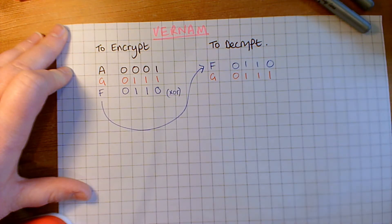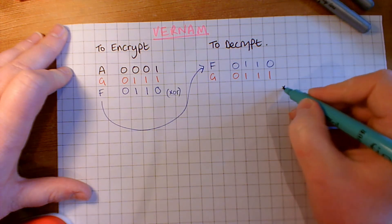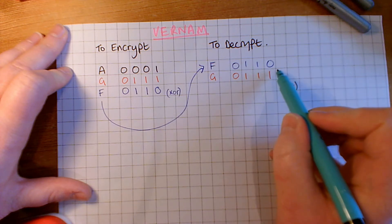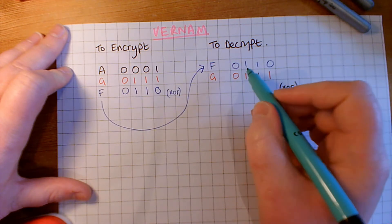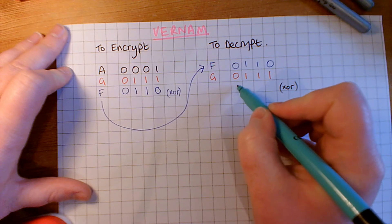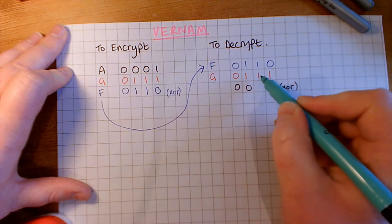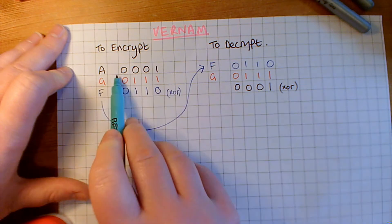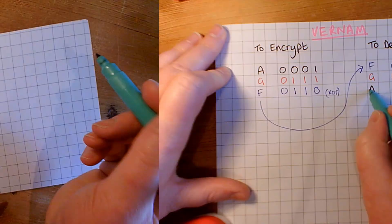So, to decrypt it, you apply the exact same principle. We're going to use the XOR. So, if we XOR each of these bits, or these pairs of bits, we have zero, zero, zero, one, which, as we know, is the letter A.